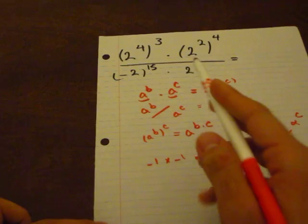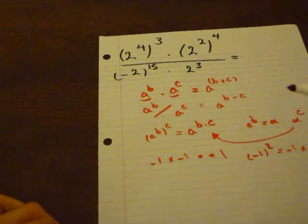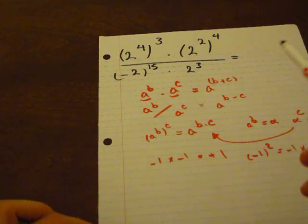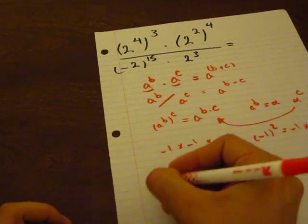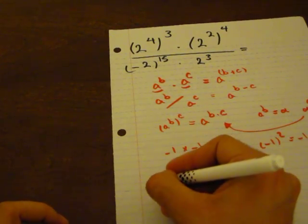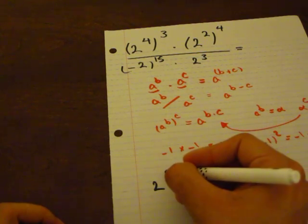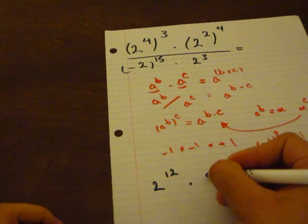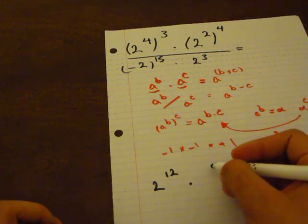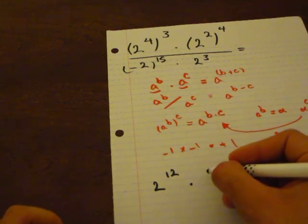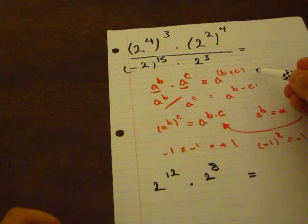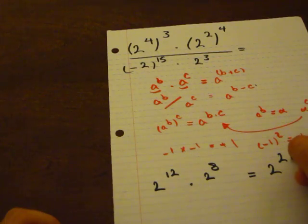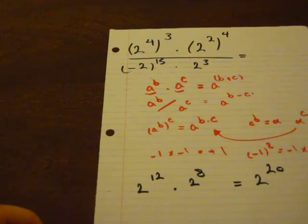After these four hints, let's solve the question. The first part is 2 to the power of 4, to the power of 3 — we can write that as 2 to the power of 12. Times the second part: 2 to the power of 2, to the power of 4, which is 2 to the power of 8. Using the first formula, we write this as 2 to the power of 20, which is 12 plus 8.